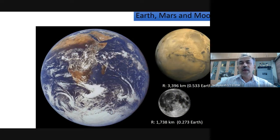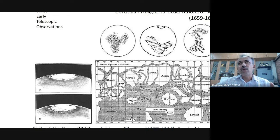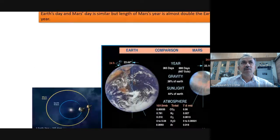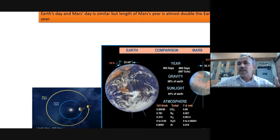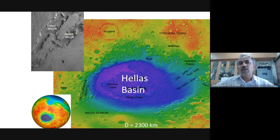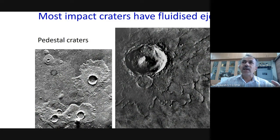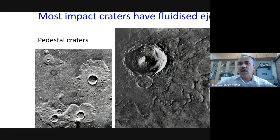This is a comparison between Earth, Moon, and Mars — their sizes. From long back, people started using telescopes to identify regions on Mars. Someone — I think Green — noted that ice is also available at the poles of Mars. Mariner 4 gave the first image of Mars, followed by the Mars orbiters. Looking at the atmosphere composition: Earth has oxygen at 0.21, whereas Mars has very little oxygen. Mars also shows basins, lake basins, mountains, and pedestal craters with fluidized ejecta.